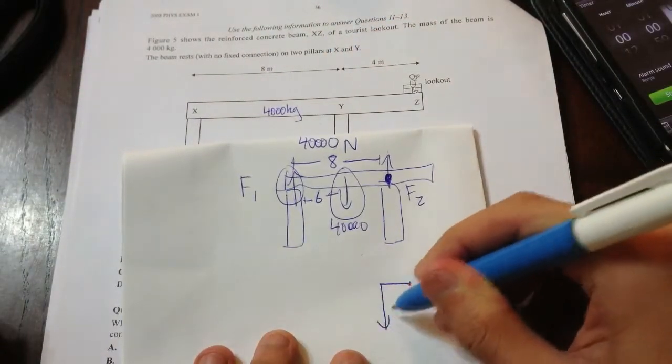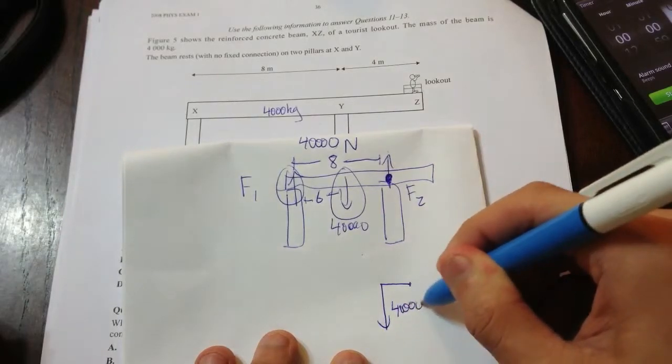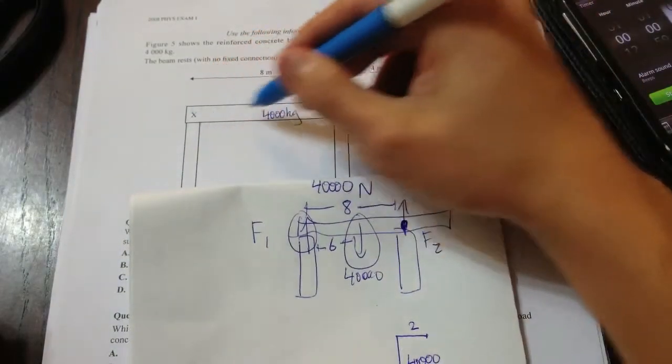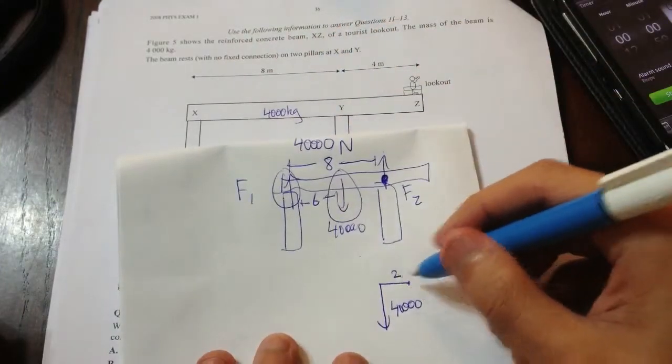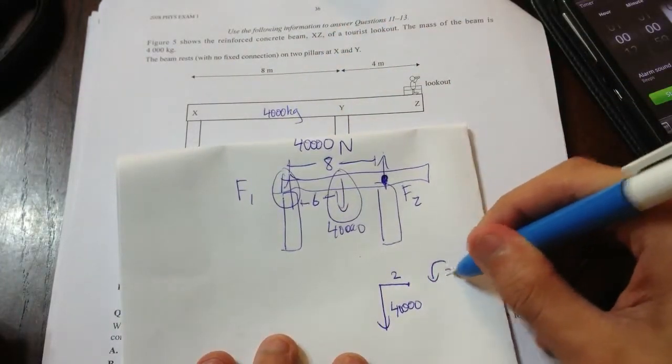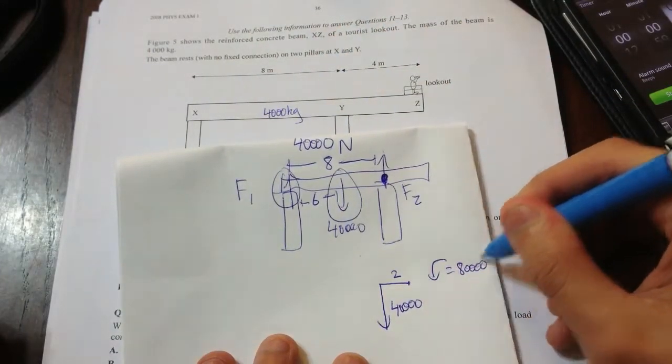first, we have a torque going inwards of 40,000, and the distance is 2, because that's 8 meters, and this is 6 meters across. So, 40,000 times 2 in this direction. That's 80,000.